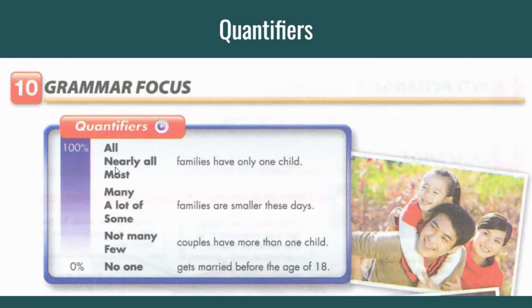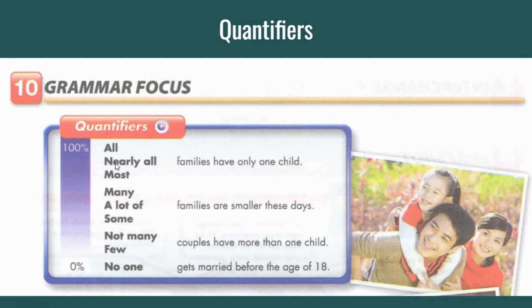We then have 'most' and 'nearly all'. Most can be referred to as around 80 percent. Nearly all can be referred to as around 90 percent — it doesn't mean all, that's why we say 'nearly all', meaning there are some people who don't. So I can say: most families have only one child, nearly all families have only one child, or all families have only one child.